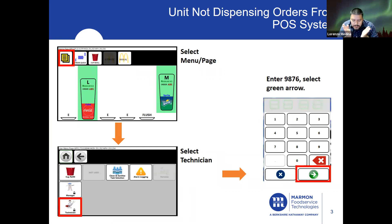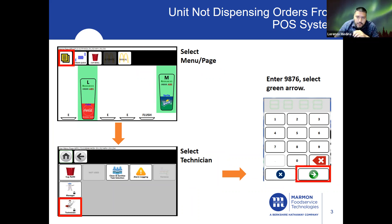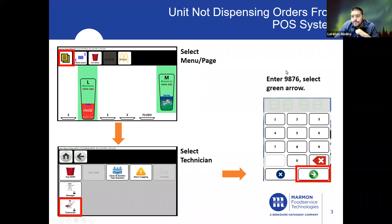This week's webinar session is titled: units not dispensing orders from the POS system. The first thing we want to do is go into technician mode. Select Menu, then select Technician, and enter the passcode 9876.